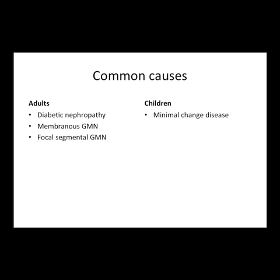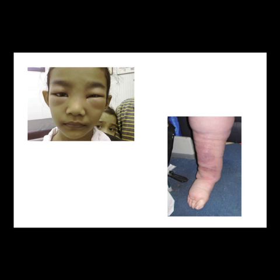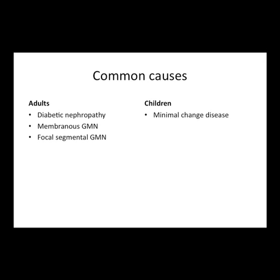Important causes of nephrotic syndrome to remember: diabetic nephropathy — glomerulonephritis in association with diabetes, one of the important secondary conditions — and in children, a condition called minimal change disease. This child probably has minimal change disease leading to nephrotic syndrome causing swelling around the eyelids. Minimal change disease responds very well to steroids and most kids get better.